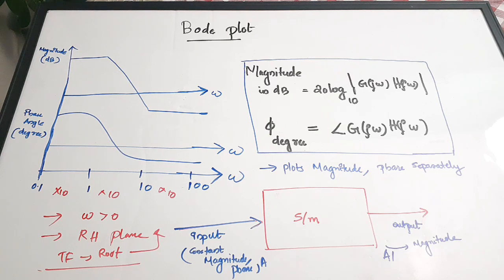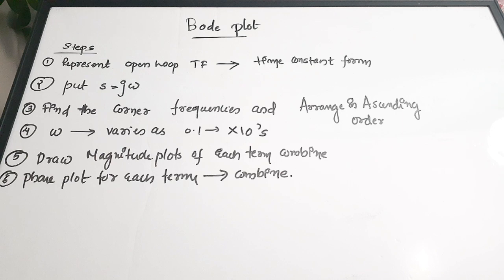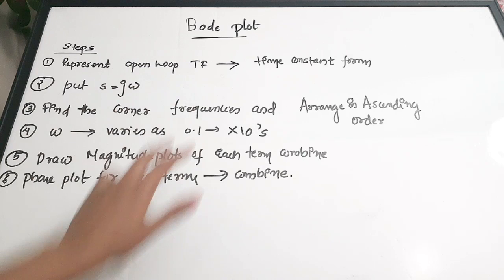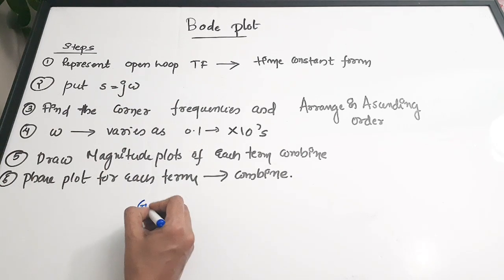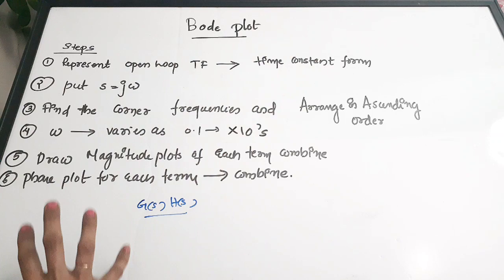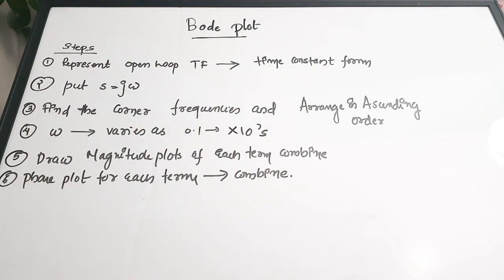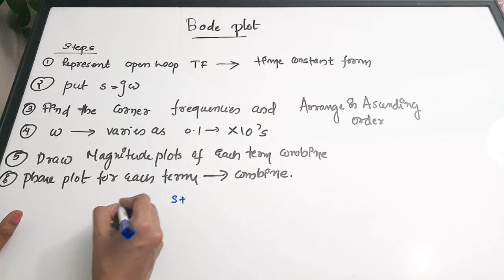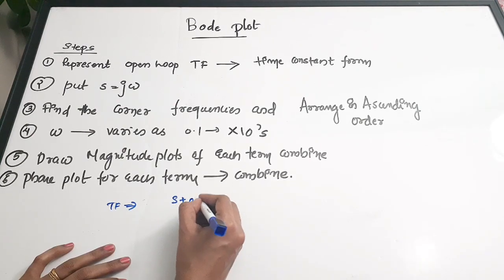The first step is to represent the open-loop transfer function in time constant form. We generally take the open-loop transfer function G(s)H(s) to check stability analysis — whether it is root locus or Routh's test. Here also we take the open-loop transfer function, but it will be given in some format and we have to bring it to the standard form so that we can draw the bode plot. This standard form is called the time constant form.